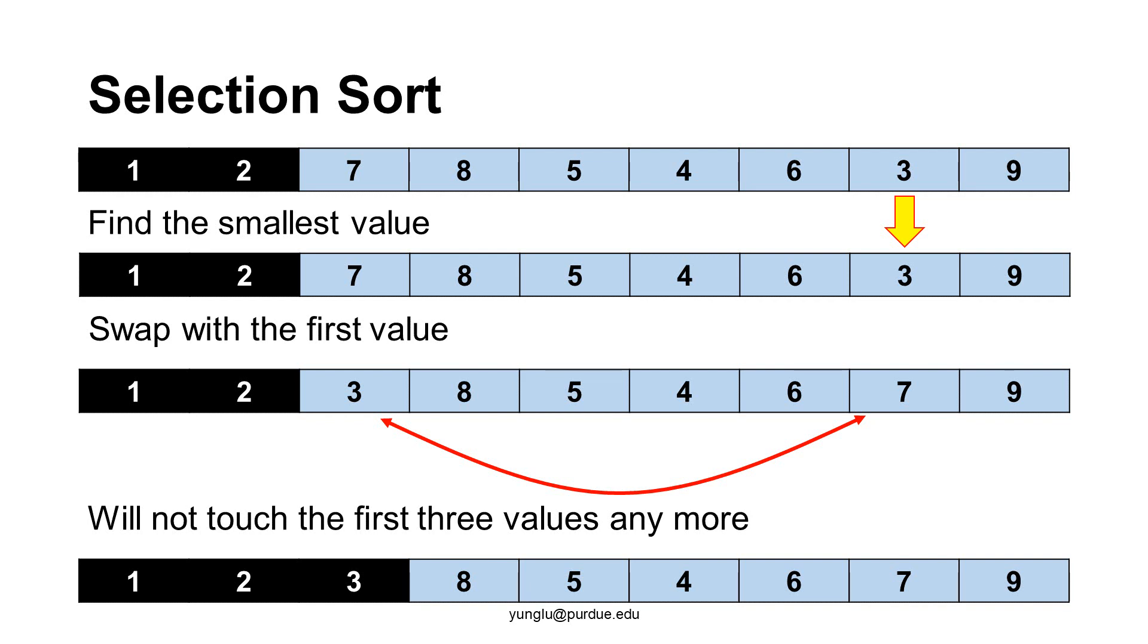This is called the selection sort because in each iteration, among the remaining part of the array we select the smallest value and swap it, if necessary, with the first element.